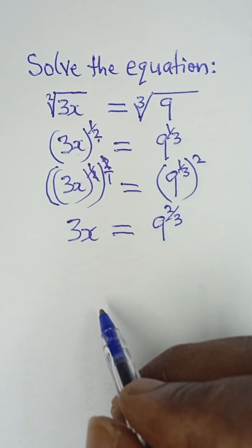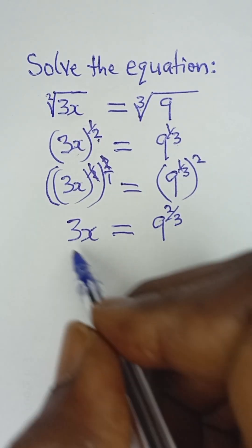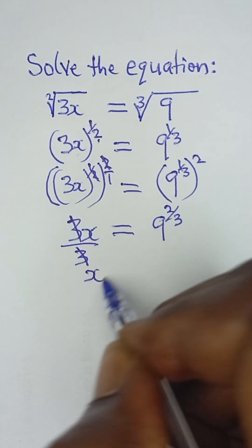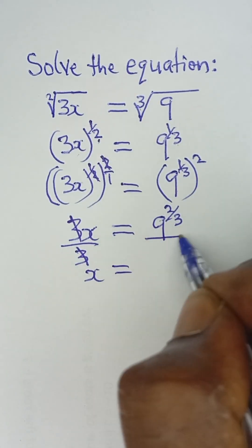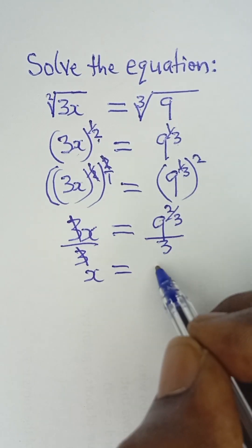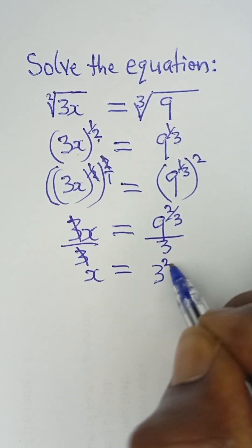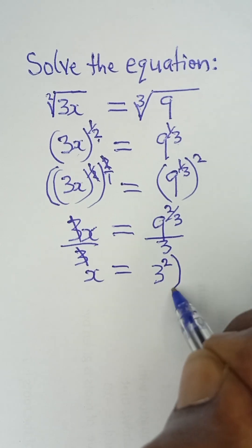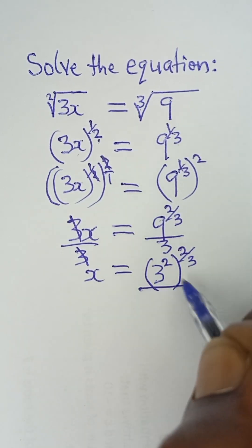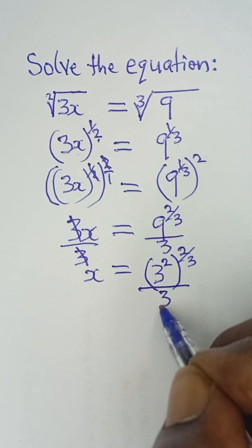Now, divide both sides by 3. If I divide this side by 3, I'm left with x. On the other side, I'm left with 9 raised to the power 2/3—9 is just 3 squared—all raised to the power 2/3, all over 3.